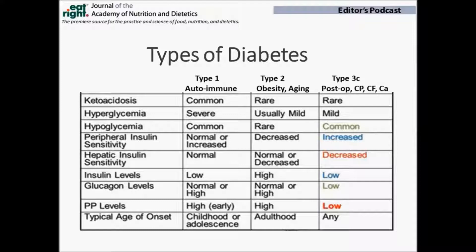Because glucagon secretion from the islet is also impaired in type 3C diabetes, the risk of hypoglycemia is greatly increased in these patients. One of the biggest differences between type 2 and type 3C diabetes is the level of pancreatic polypeptide, also called PP. PP levels are usually increased two- or three-fold above normal in type 2 diabetes, but are usually very low in type 3C diabetes.